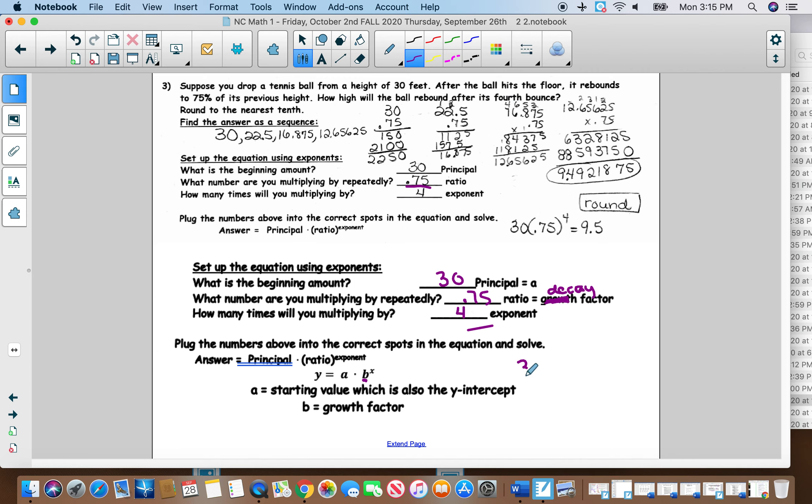So again, your starting amount is always the number in front of the growth or decay factor. And so when I put that in the calculator, I do get 9.5. And we should put a little feet out beside of it.